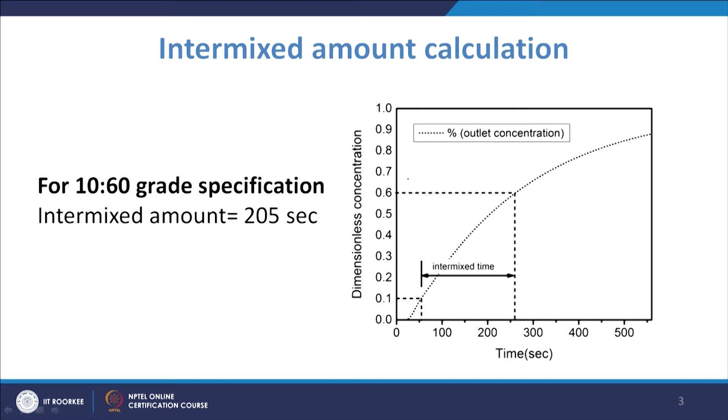Salt or dye are used as tracers in water modelling for the RTD curve — the C-curve — from pulse inputs. For grade intermixing, the new grade steel itself is treated as the tracer replacing the old grade. The old liquid flow is stopped and the new steel (tracer) is allowed in, so the concentration continuously increases inside the tundish.